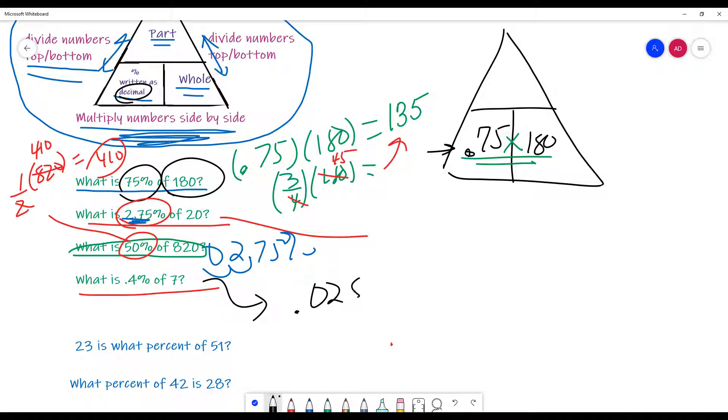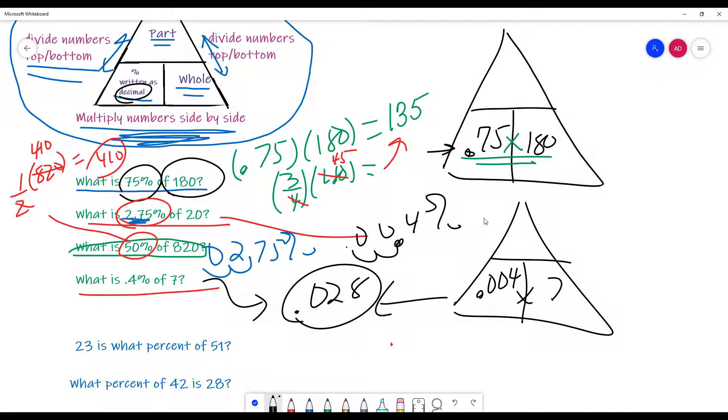So, this answer is 0.028. The way you would get that, just remember, your percent is 0.004 times 7. So, just remember, 0.4%, two places to the left, gives me 0.004. And when I multiply those two together, because they are side by side, I get 0.028.